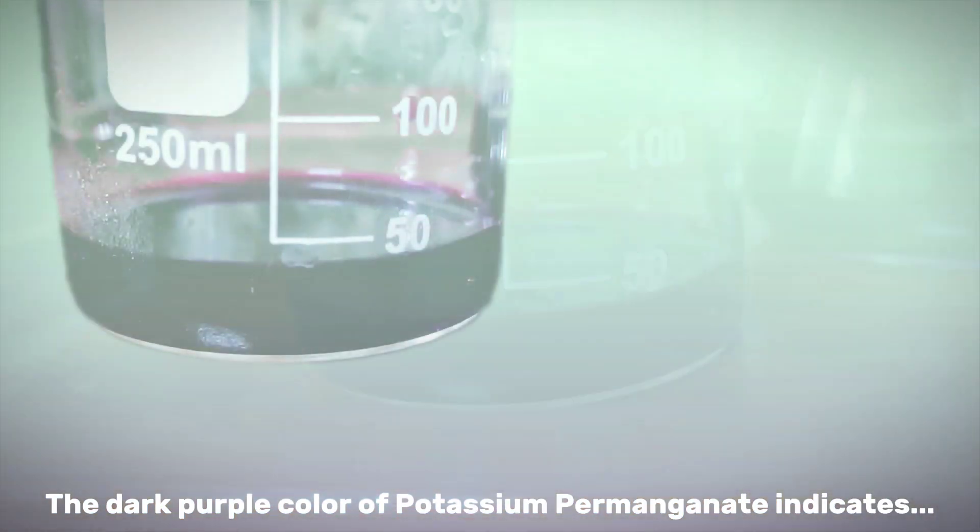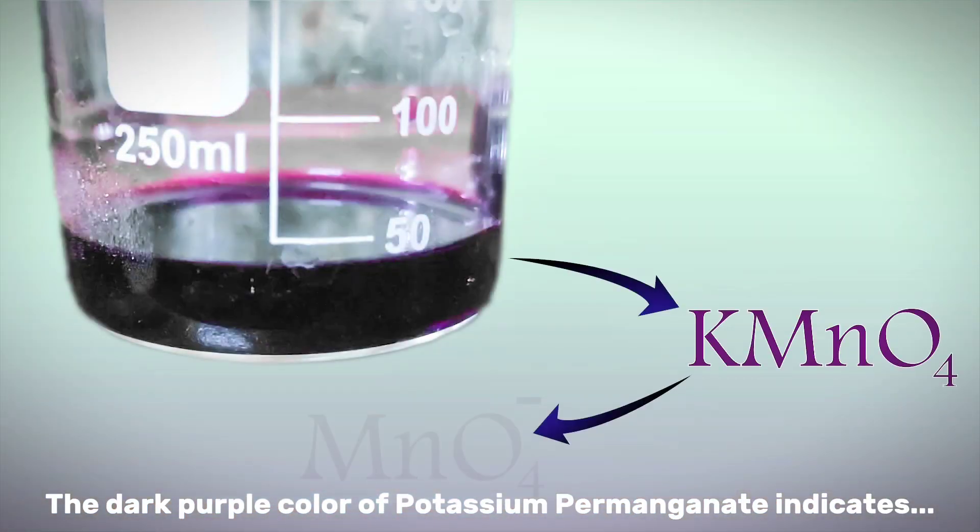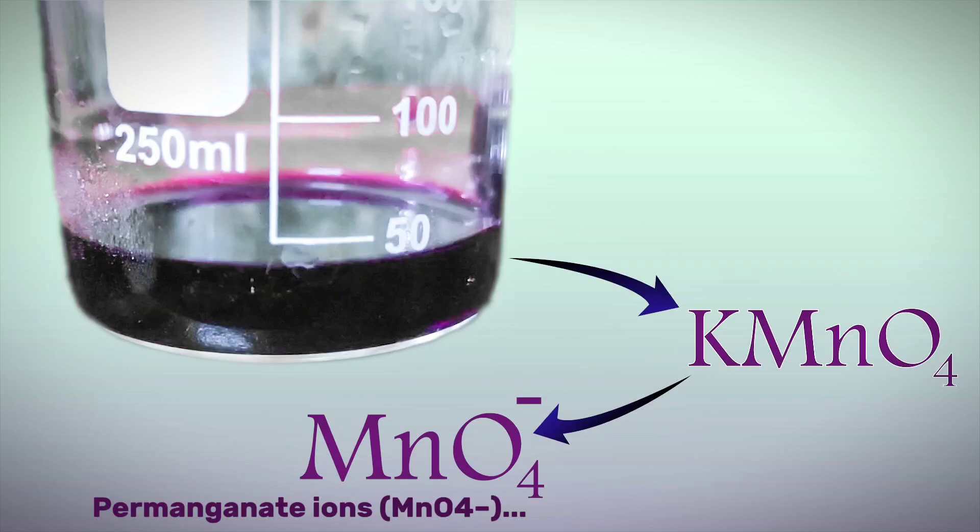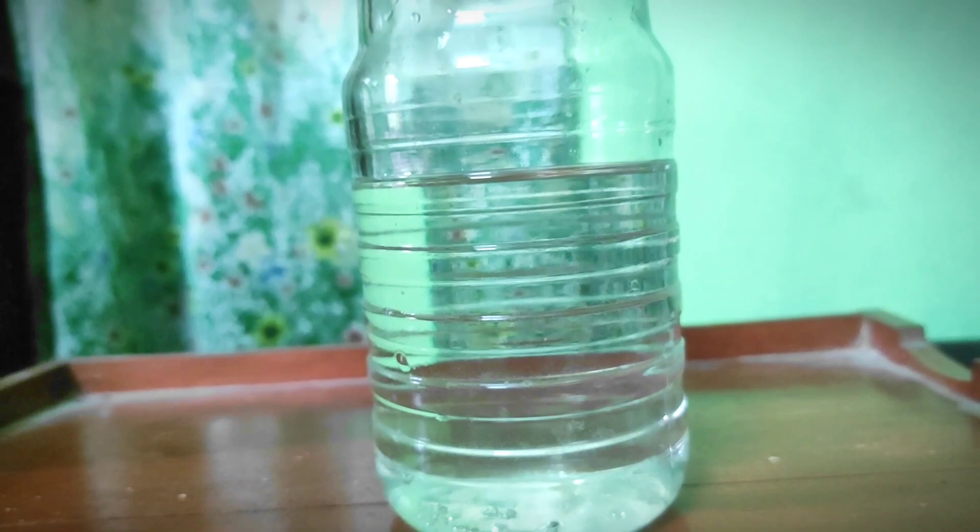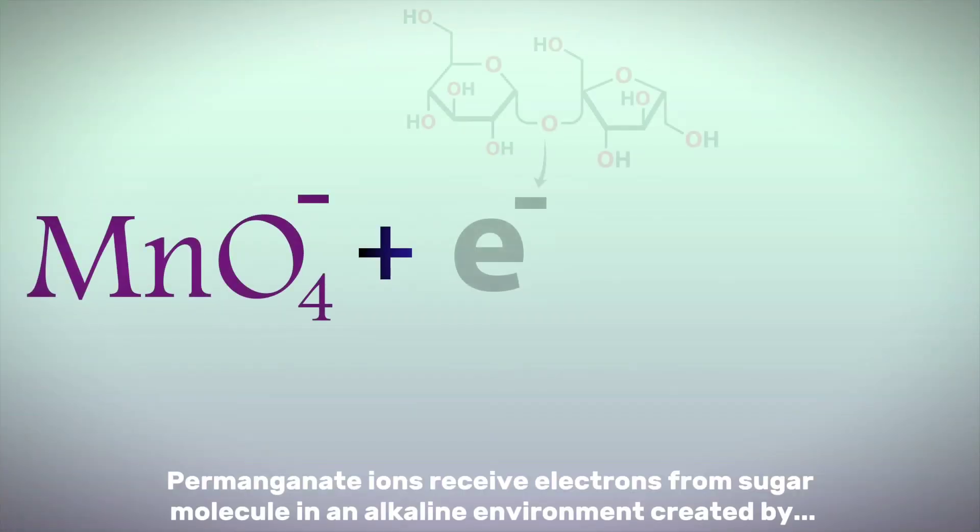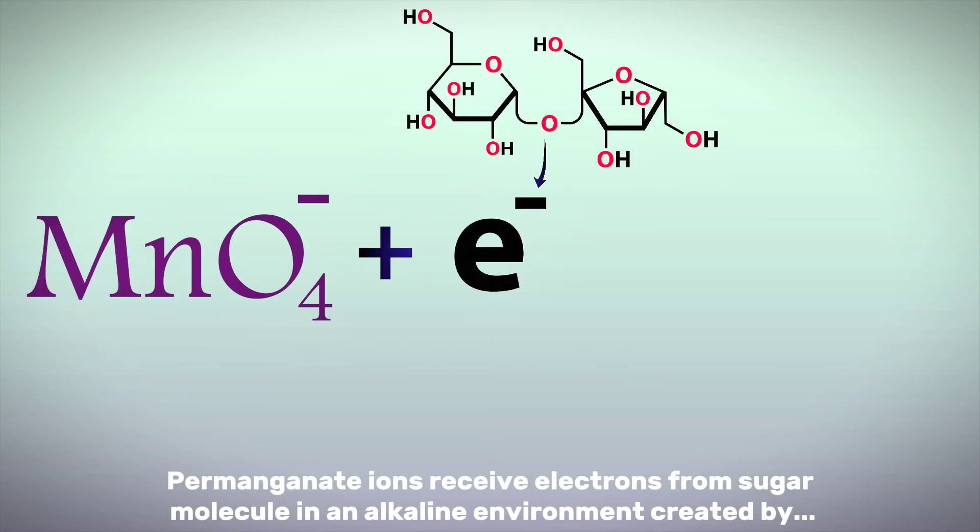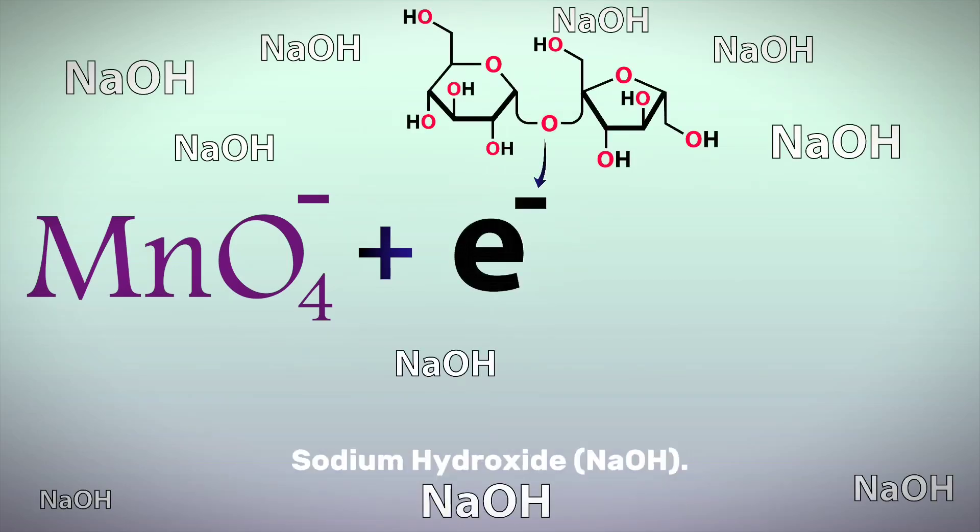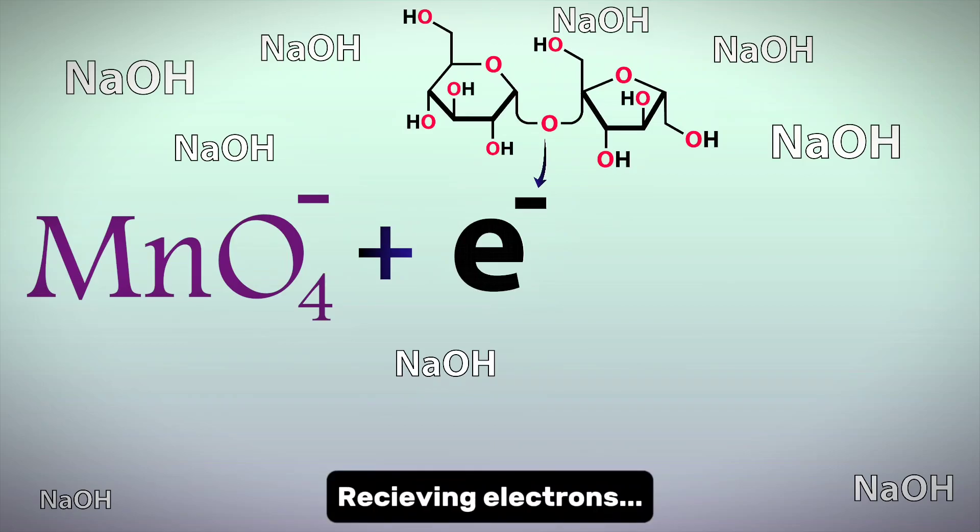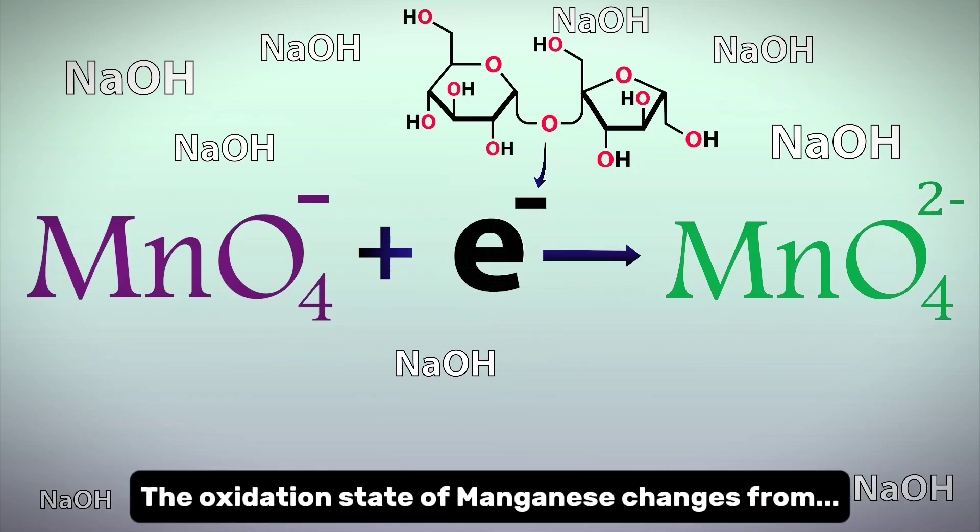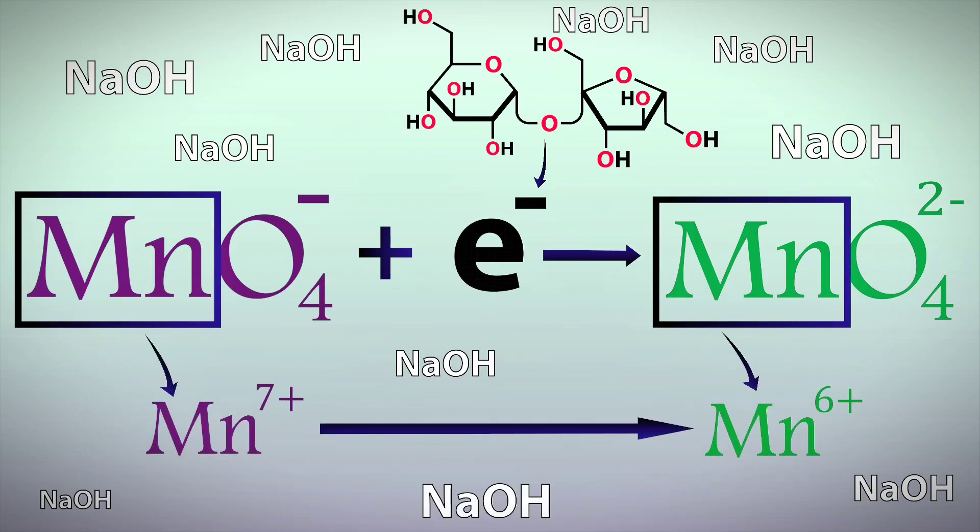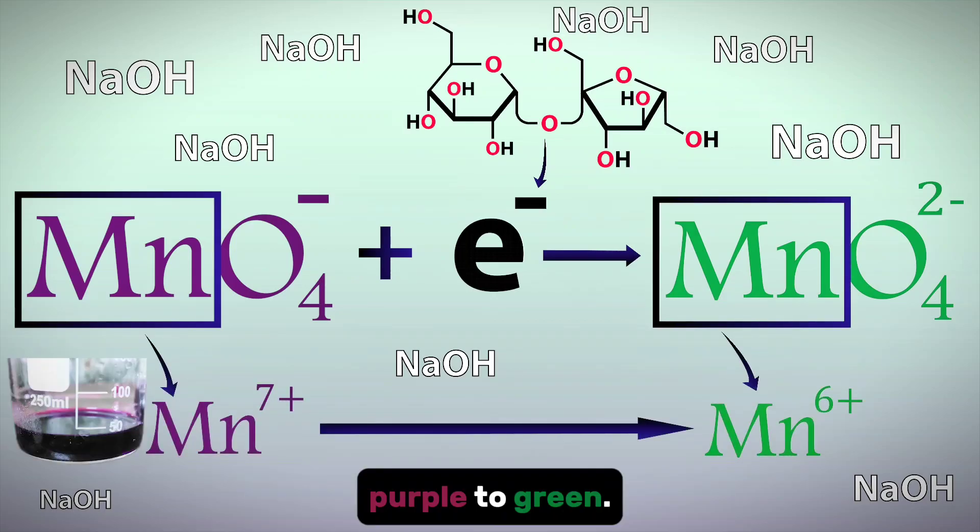The dark purple color of potassium permanganate indicates permanganate ions. And here, manganese contains the oxidation state plus 7. After mixing the solutions together, permanganate ions receive electrons from sugar molecules. In an alkaline environment created by sodium hydroxide, receiving electrons, permanganate ions get reduced to manganate ions. The oxidation state of manganese changes from plus 7 to plus 6, and the color changes from purple to green.